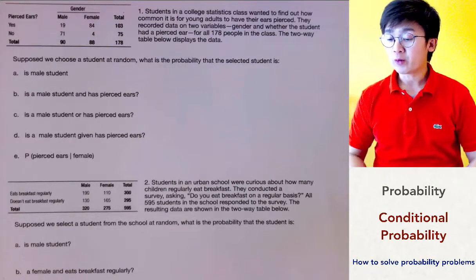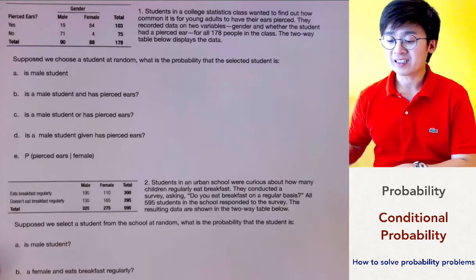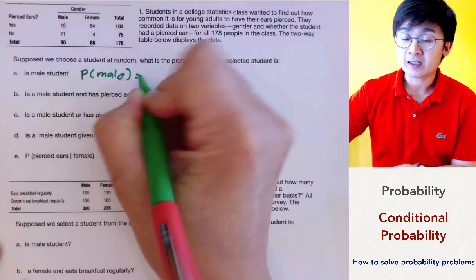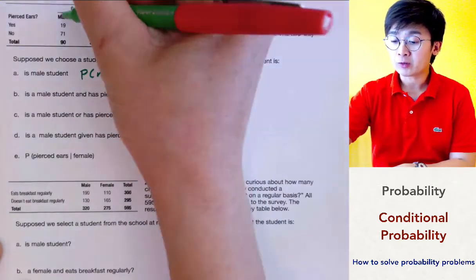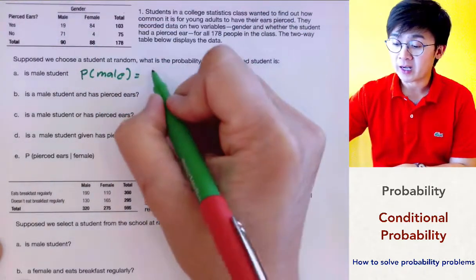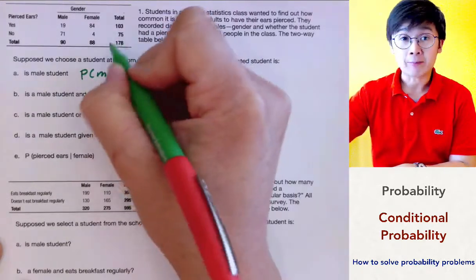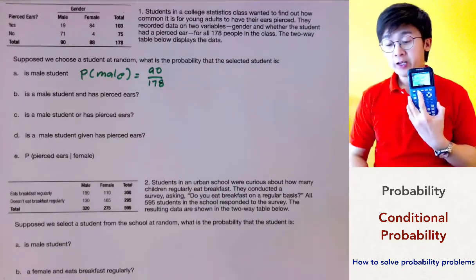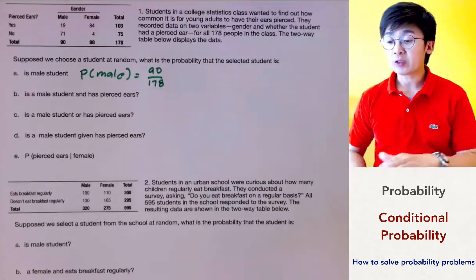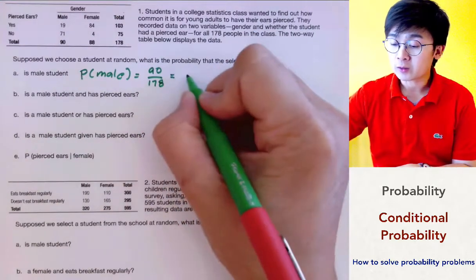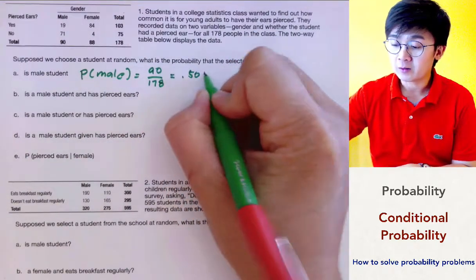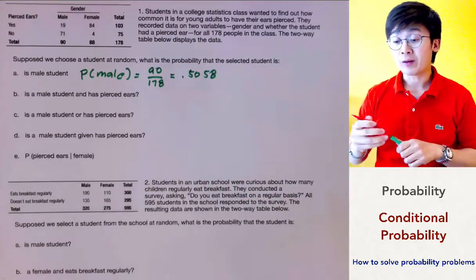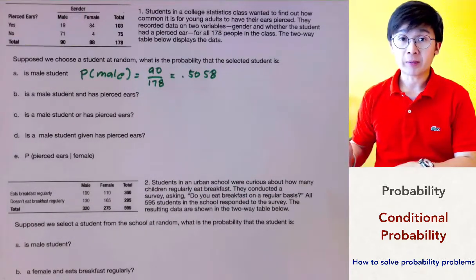To answer the first question, what's the probability that the student selected is a male student? The probability is simply using the total number of male participants, which is 90, divided by the sample space of 178. Using a calculator to convert the fraction to decimal, it will equal 0.5058. This is the probability that when we select a student at random, it would be a male student based on this survey.